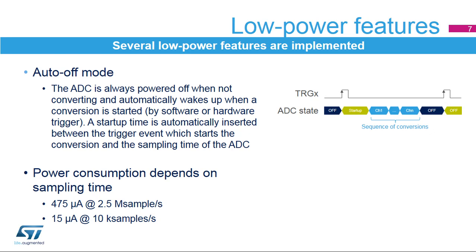The ADC has an automatic power management feature called auto-off mode. When enabled, the ADC is always powered off when not converting and automatically wakes up when a conversion is started by software or by a hardware trigger. A start-up time is automatically inserted between the trigger event and the sampling time of the ADC. The ADC is then automatically disabled once the sequence of conversions is complete. Auto-off mode can be combined with wait mode for applications clocked at low frequency, providing significant power savings if the ADC is automatically powered off during the wait phase and restarted as soon as the ADC-DR register is read.